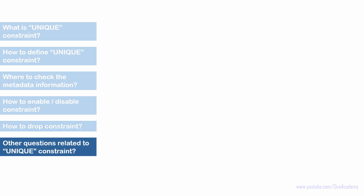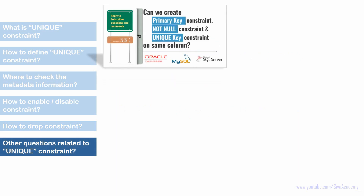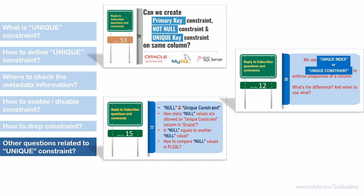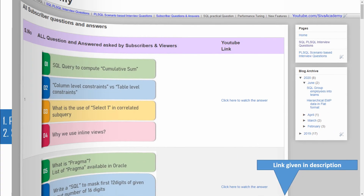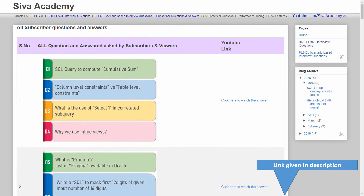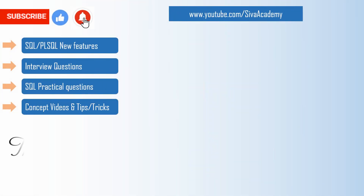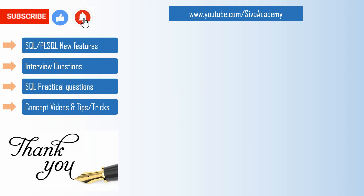I have already covered a few unique constraint related videos and the links will be in the description. The related questions covered include: can we create a primary key, not null, and unique constraint on the same column; should we use a unique index or unique constraint to enforce uniqueness and what is the difference; and how many null values are allowed on a unique constraint in Oracle. If you want any additional questions covered, post in the comments or email me. If you've learned something new, please like, subscribe, and stay tuned for more technical videos. Thanks for watching!